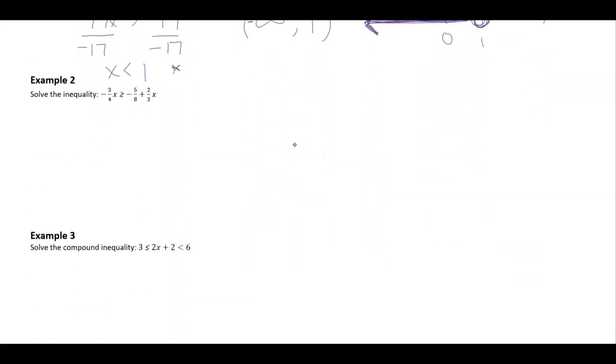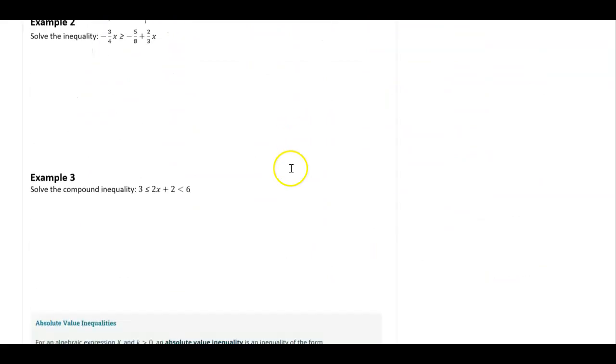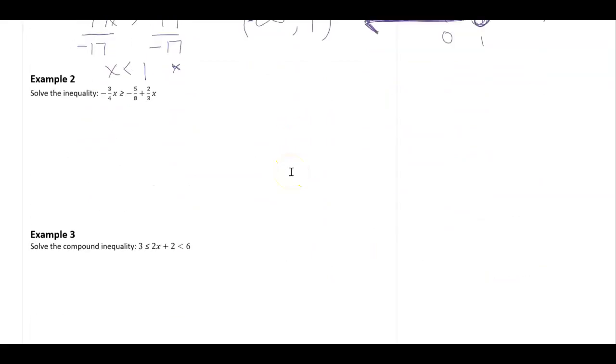Alright, let's look at another example. This example here, I'm going to have to multiply through by a common denominator. So if I have 4, 8, and 3, and I want to figure out a least common denominator, that's going to be 24. So I'm going to multiply each and every term by 24. 24 being positive means I'm not going to switch the sign at all.